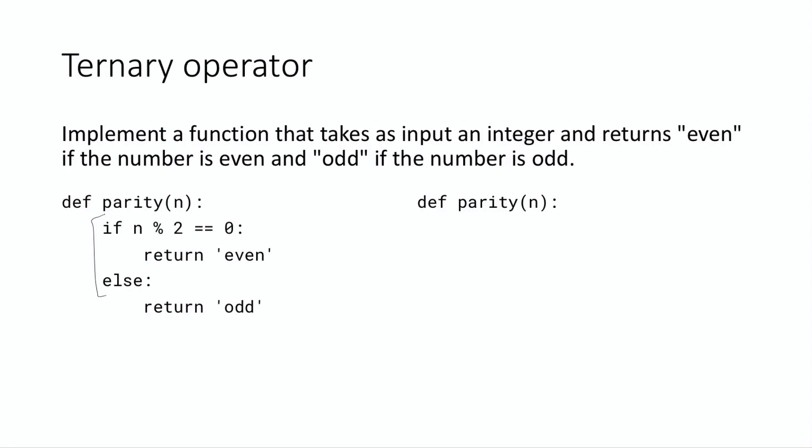And so here's what the syntax looks like. It's something like, let's say x is equal to a if condition else b. That's what it looks like. And so here's basically how it breaks down again. So x will be equal to a if the condition is true, and it will be equal to b otherwise.